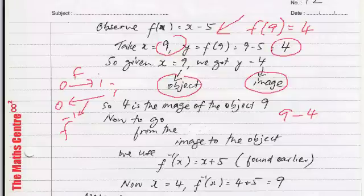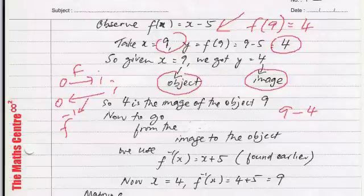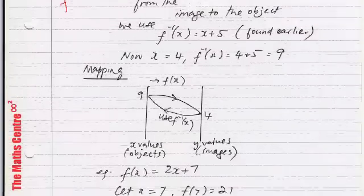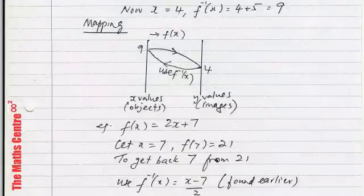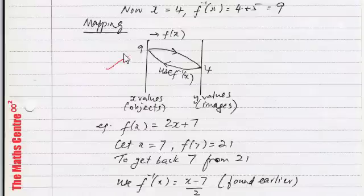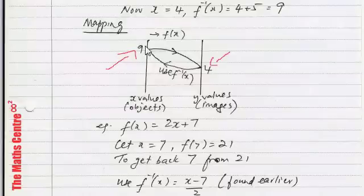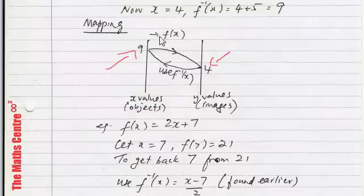I've shown you a simple mapping diagram in here. And let's look at it. We call it mapping. So, on the left hand side, you will see the object 9. On the right hand side here, you will see the image 4. So, if you want to go from 9 to 4, I've shown you an arrow. So, you need to use f(x). If you want to go from 4 back to 9, we need to use f inverse x. That's the idea.